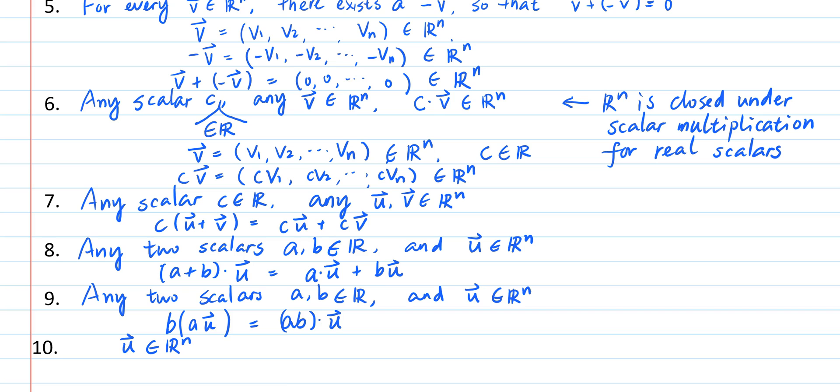And last but not least, for any element u in R^n and the scalar 1, then the scalar multiple of 1 and u is equal to the vector u itself.